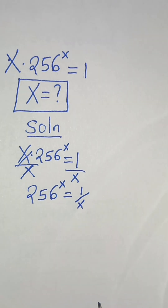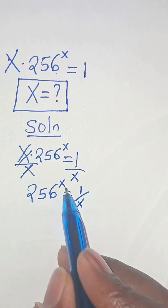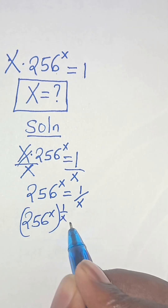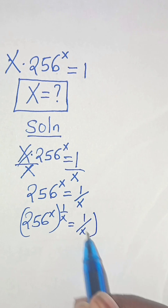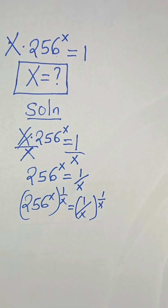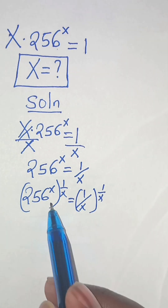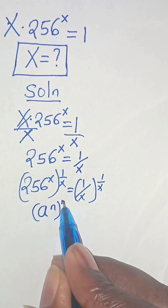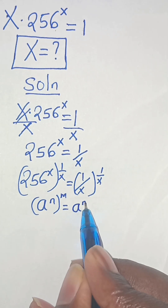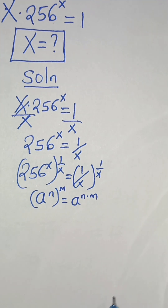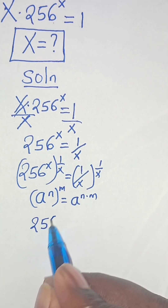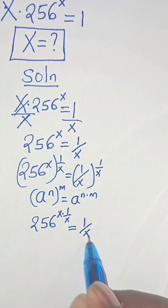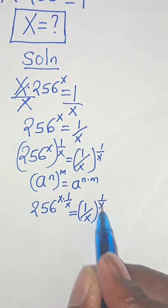To eliminate the power of x, let's raise both sides to the power of 1 over x. We have 256 raised to the power of x, then raised to the power of 1 over x. This is in the form of a to the power of n raised to the power of m, which equals a to the power of n times m. So this gives us 256 raised to the power of x times 1 over x, which equals 1 over x raised to the power of 1 over x.